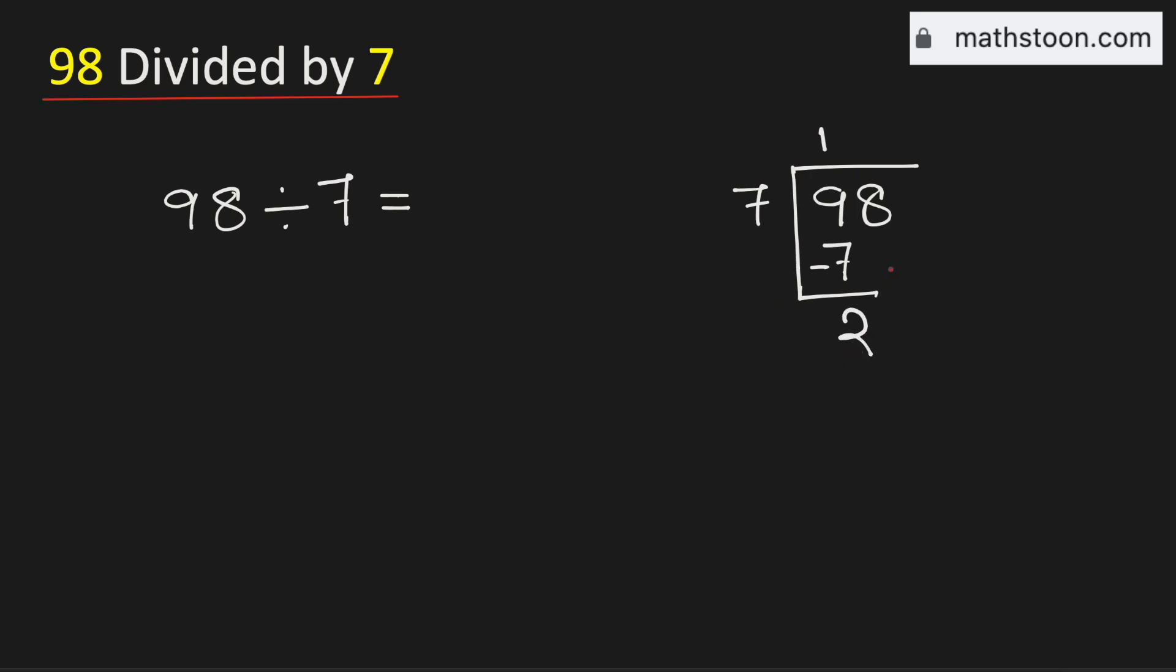As 7 cannot go into 2, that is why we need to bring down this number 8 here. Now, we know that 7 times 4 is 28.